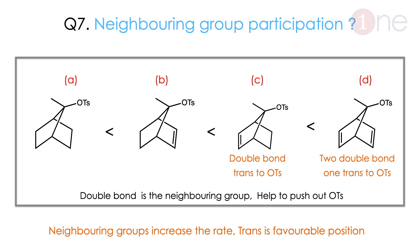The same neighboring group participation but here the neighboring group is a double bond. The electron-rich double bond assists the leaving group. Comparing A, B, C, and D — A is the least because there is not much contribution from the double bond. D is the highest because two double bonds are present. The real question is between B and C: since trans positioning is favorable for neighboring group participation, C is faster than B. Trans position is better for the neighboring group.